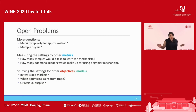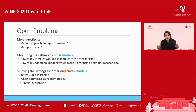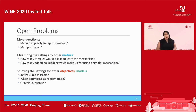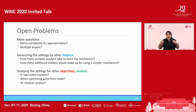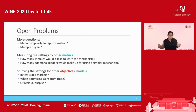There is a lot more work to do in this space of interdimensional problems. We could ask about menu complexity for approximation, about multiple buyers, or measure settings by other metrics such as sample complexity or how many extra buyers compensate for a simpler mechanism. It would also be interesting to turn to other objectives — two-sided markets, optimizing gains from trade, residual surplus — using these settings as a stepping stone simpler than the fully multi-dimensional case.